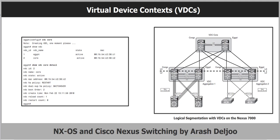This video shows the required steps to creating a VDC. Once the VDC is created, you will assign resources to it. VDCs are always created from the default admin VDC context, or VDC one. The maximum number of VDCs that can be configured per Nexus 7000 chassis is four — the default VDC plus three additional. Note that the simulator may support only one VDC.